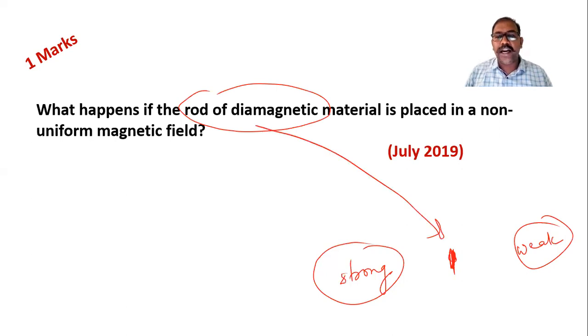So this stronger magnetic field repels it more. Here, this diamagnetic rod moves from the stronger part of the field to the weaker part of the field, and this is the answer.